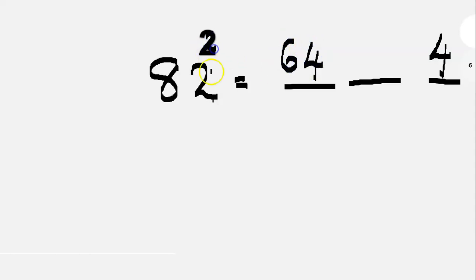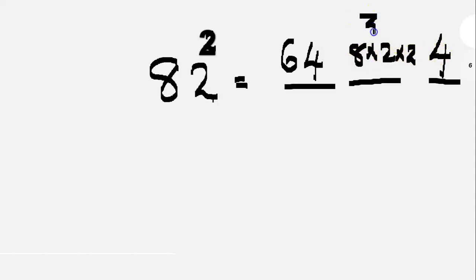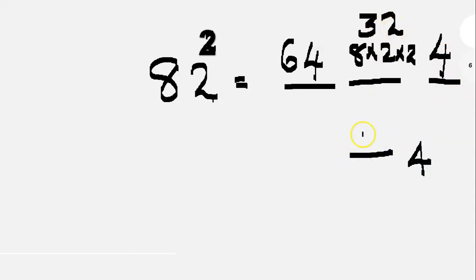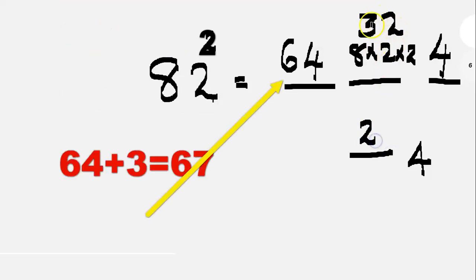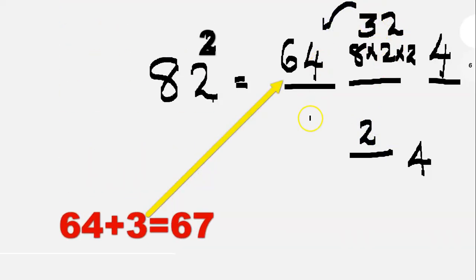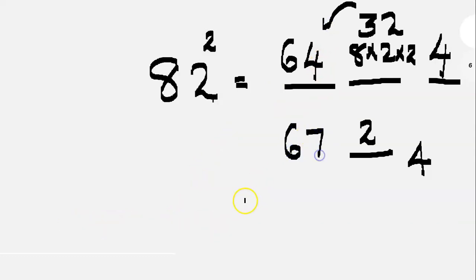Now we multiply 8 into 2 into 2. That is 8 into 2 is 16, and 16 into 2 is 32. The ones digit is 2, and we carry 3. Then 64 plus 3 is 67. The answer is 6724.